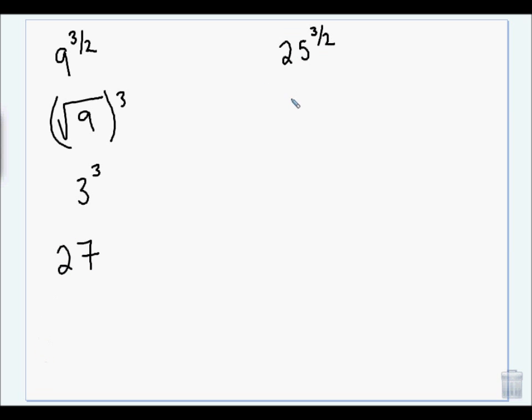And here I have the square root of 25 to the third. The square root of 25 is 5 to the third. So that's 5 times 5 times 5, so that's 125.